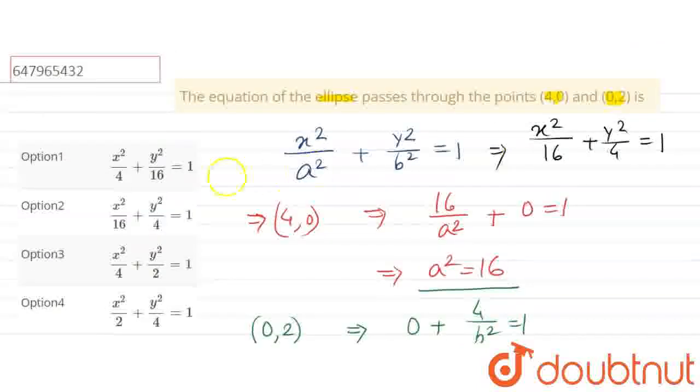We can see this form is shown in the options. Checking the options, we don't need to multiply by 16. Looking at option 2, we have x²/16 + y²/4 = 1. So the correct option is option 2.